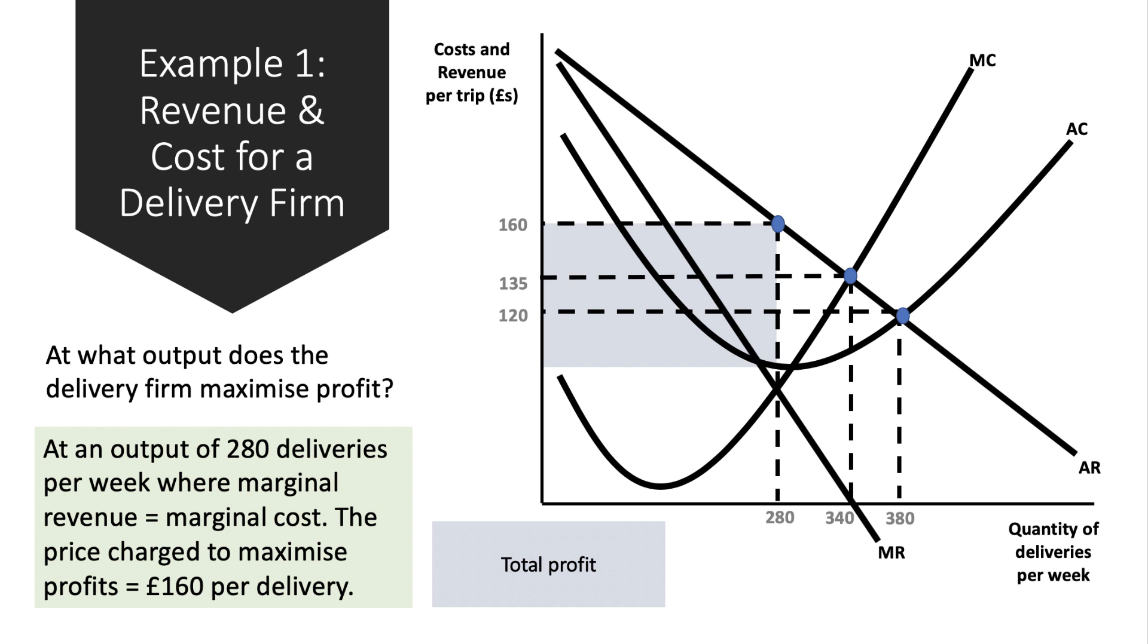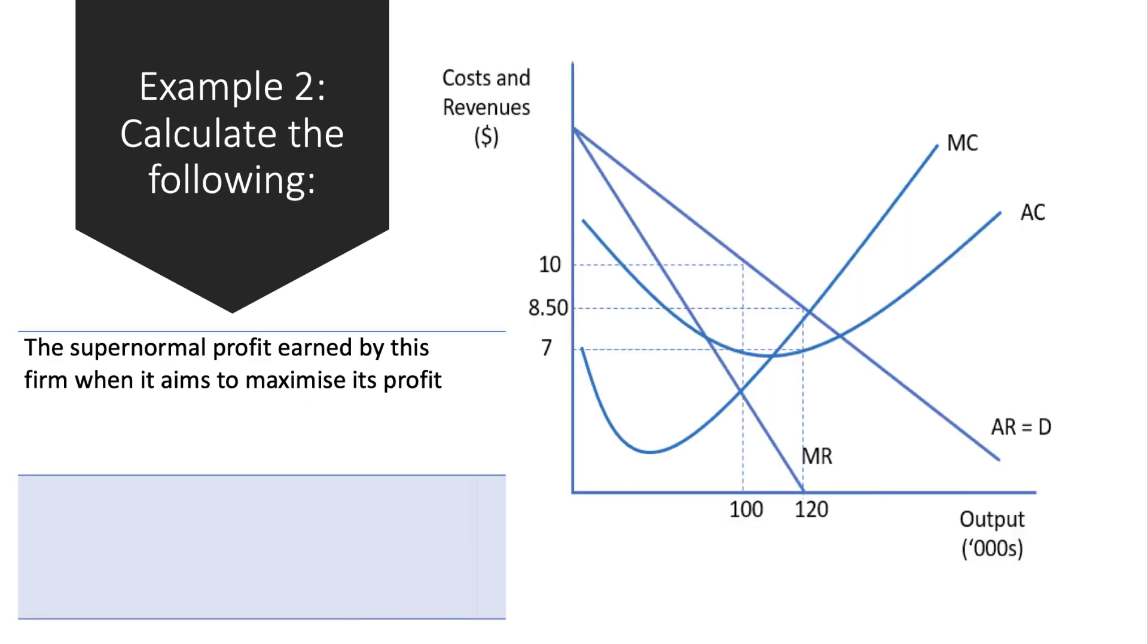Here's another example - maybe have a go at this one yourself. Again, a firm with a downward sloping average and marginal revenue and some pretty familiar looking cost curves.